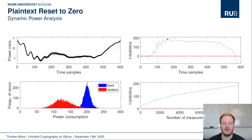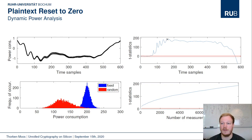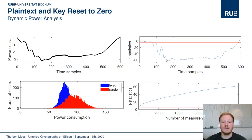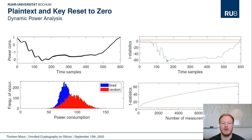For all four scenarios, traces were collected in a fixed versus random manner, comparing distributions visually and statistically using the non-specific Welch t-test. In the plaintext-reset-to-zero scenario, the groups are easily distinguishable, indicating a good amount of input dependency in the traces. For the plaintext and key reset to zero, the measured voltage drop is about twice as large — matching our gate-level simulation expectation due to more glitches when the key changes — though the noise level is a bit higher and distinguishability is reduced.